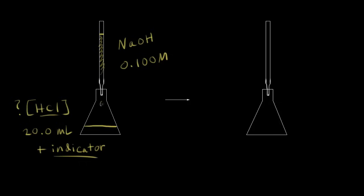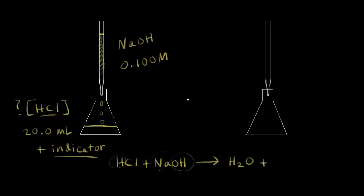We allow the sodium hydroxide to drip into our flask containing our HCl and our indicator. The acid and the base will react — we get an acid-base neutralization reaction: HCl plus NaOH. The OH minus and H plus give us H2O, and our other products are Na plus and Cl minus, which give us NaCl, or sodium chloride.